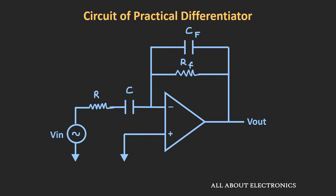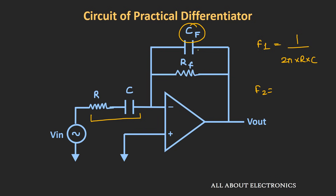Moreover, if we introduce a feedback capacitor CF, we can further increase the stability of the output at high frequencies. This is how the practical differentiator circuit looks. It contains two low-pass filters: the R-C pair at the input and the RF-CF pair in the feedback. This gives two cutoff frequencies: F1 = 1/(2π×R×C) and F2 = 1/(2π×Rf×Cf).